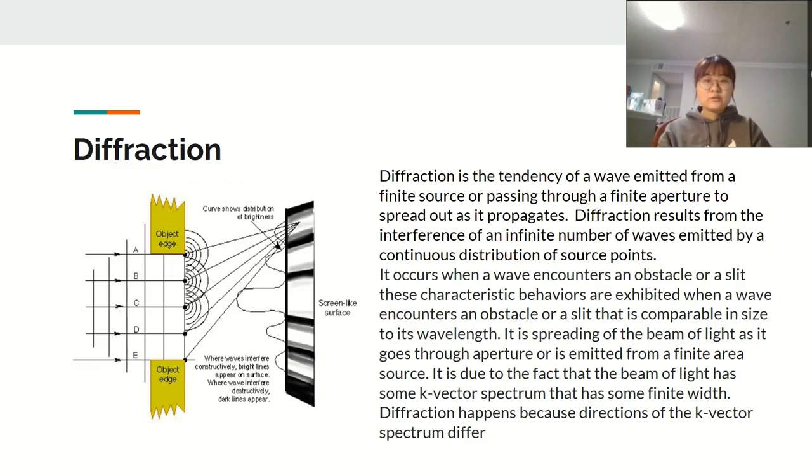Diffraction results from the interference of an infinite number of waves emitted by a continuous distribution of source points. It occurs when a wave encounters an obstacle or a slit that is comparable in size to its wavelength. It is spreading of the beam of light as it goes through aperture or is emitted from a finite area source.